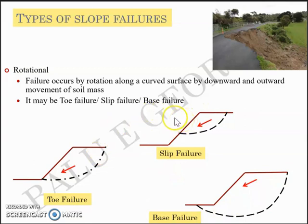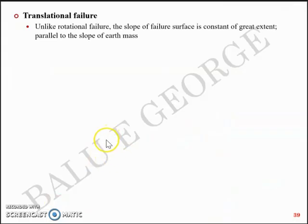But anyways, the rotational failure happens along a curved surface, which can be defined by a curve. Second one is a translational failure. And unlike rotational failure, the slope of failure surface is constant of great extent, parallel to the slope of the earth mass like this. You have the slope like this, and the failure surface will have a locus like this, which goes parallel to the slope of the earth mass for quite a long extent. That's a translational failure.